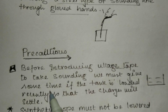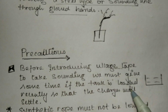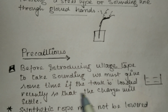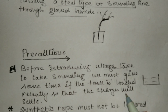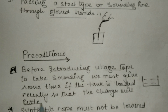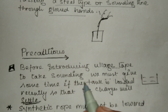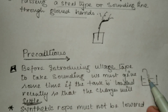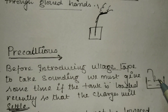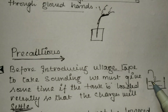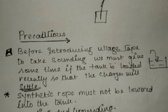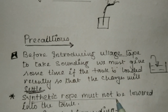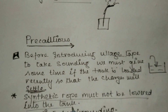The first precaution: before introducing the ullage tape to take sounding, we must allow some time if the tank has been loaded recently. The charges will need some time to settle — if we don't allow this time and put the ullage tape inside the tank, it may give rise to static electricity. Second, synthetic rope must not be lowered into the tank.